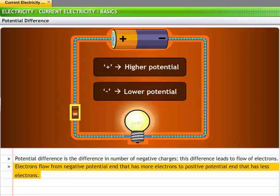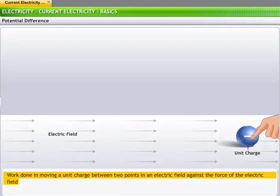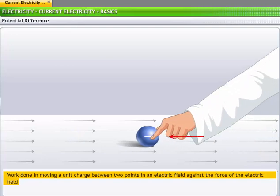Whenever there is a potential difference, the current flows from the positive potential end to the negative potential end. Numerically, potential difference is the work done in moving a unit charge between two points in an electric field against the force of the electric field.